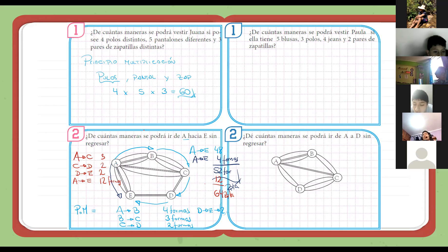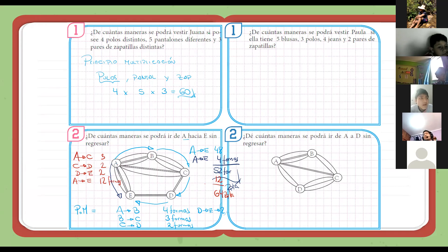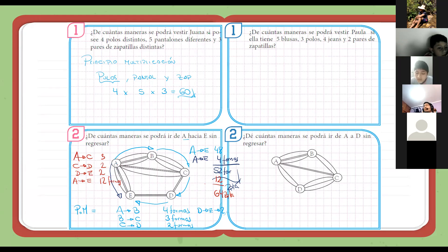Bien, la primera, recuerden que tienen que tomar dos casos, ¿ya? Por ahí me han enviado la respuesta ciento veinte. Eso no sería correcto, ¿no? Hay que considerar si es que utilizar blusa y polo al mismo tiempo, de repente, ¿no? Entonces, colocar cuál es su consideración. Porque si colocan así nada más multiplicación, entonces estaría incorrecto. Vamos a explicarles con respecto al principio de adición, ¿ya? Vamos a detallarlo.